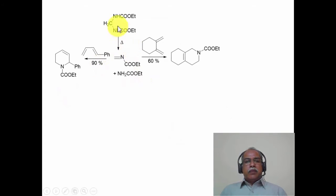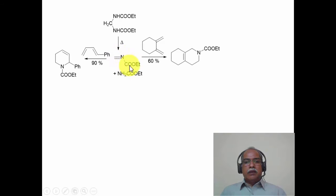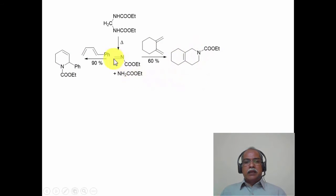In this example, a carbamate is heated to undergo loss of ethyl carbamate, generating an ethyl carboxylate-substituted imine — an imine carbamate derivative. This reacts with 1-phenyl-substituted butadiene to produce the corresponding phenyl-substituted tetrahydropyridine derivative. It also reacts with another diene to produce a bicyclic Diels-Alder adduct.